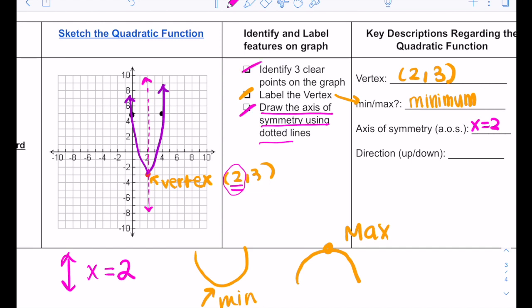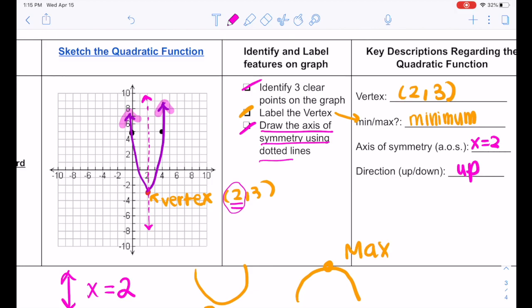Now the last question that the worksheet asks me for this problem is: is the direction going up or down? Since the parabola is going up because you see the arrows pointing upward, you'll say the direction is going upwards. And this is how you'll complete these problems.